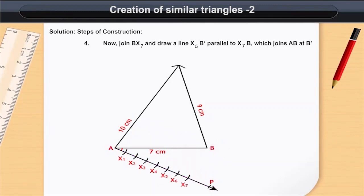Now, join X7 to B and draw X5B' parallel to X7B, which intersects AB at B'.